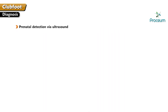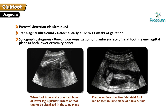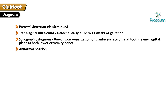Diagnosis. Clubfoot is a clinical diagnosis. Prenatal detection via ultrasound is possible. Transvaginal ultrasound can detect the abnormality as early as 12 to 13 weeks of gestation. The sonographic diagnosis is based upon visualization of the plantar surface of the fetal foot in the same sagittal plane as both lower extremity bones. The abnormal position should persist over time and despite motion of the foot, since a fetus can temporarily turn its foot into a position simulating clubfoot.